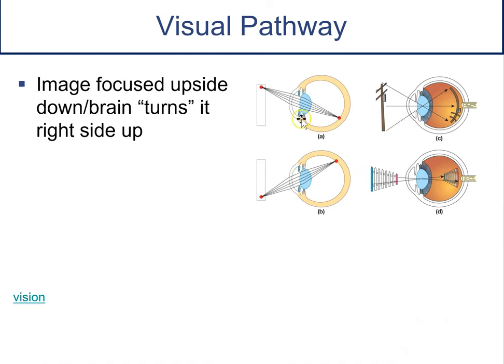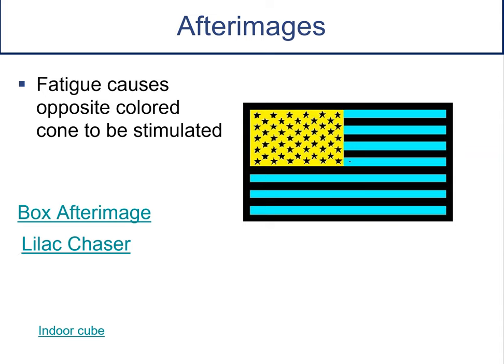Interestingly, all visual information comes into the brain upside down, and the brain flips it right side up. Most of what comes in is just information like pixels, and then the brain puts it together to make a pattern — that's why we have optical illusions, because the brain is trying to make sense of what it sees and might not always get it right. An after image occurs when you stare at something and fatigue a cone: if you fatigue a red, green, blue, black, or white cone, you'll see the opposite color. Staring at the inverted American flag fatigues those cones so you then see the red, white, and blue.